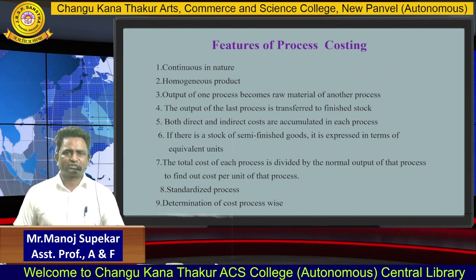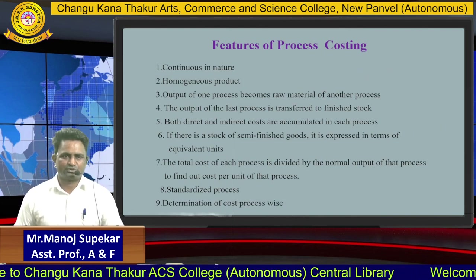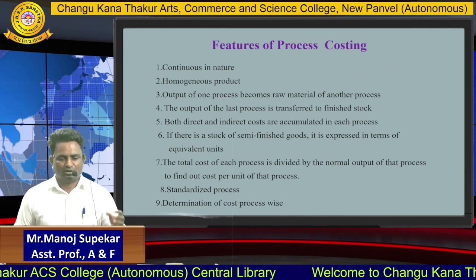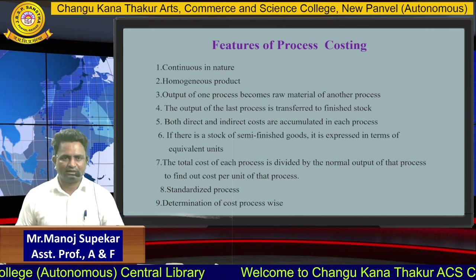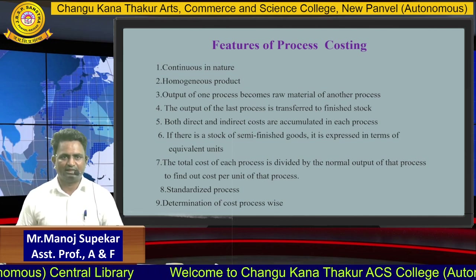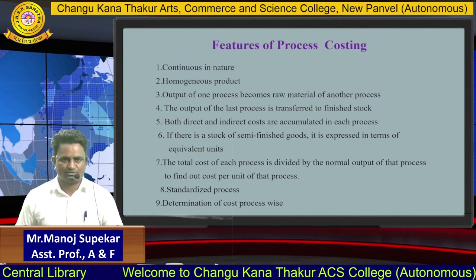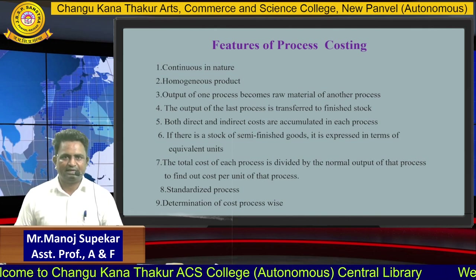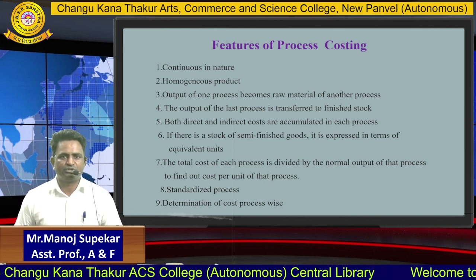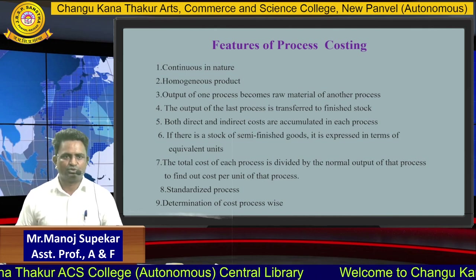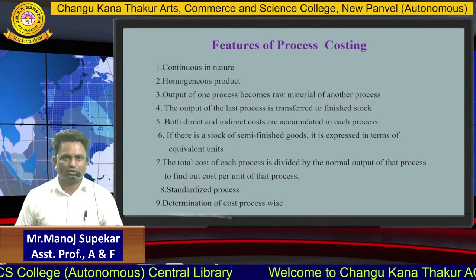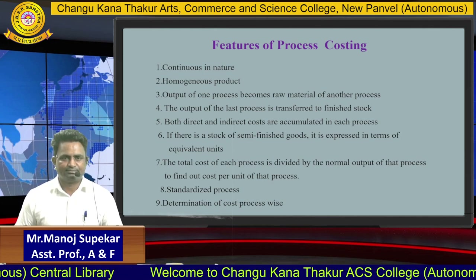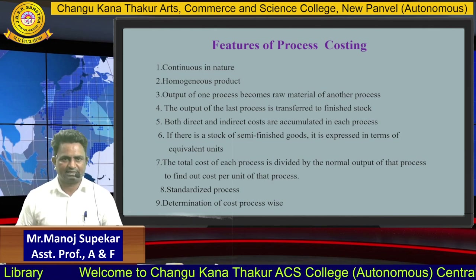What are the features of process costing? The first feature is that process costing is continuous in nature — meaning to purchase raw material, convert it into finished goods, and then finalize the goods for selling. The second feature is that it is used for homogeneous goods. Examples include sugar companies and textiles, and for these organizations, process costing is very helpful.